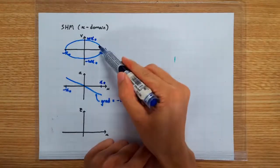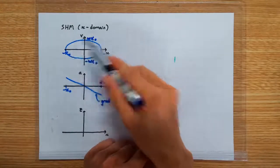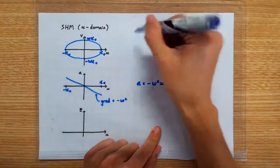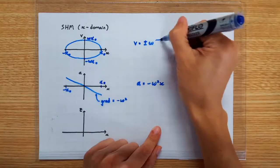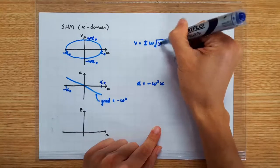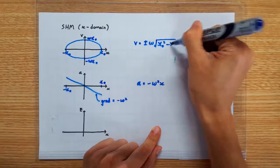In fact, we know the mathematical formula for this ellipse. It's actually V equals plus minus omega the square root of X0 square minus X square.